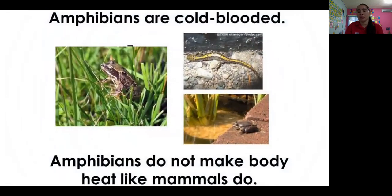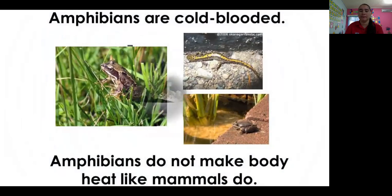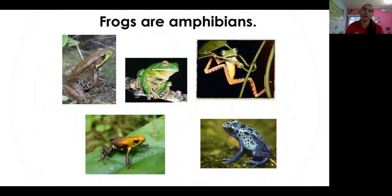The amphibians have cold blood. Their body does not make body heat. They don't come out in the sun to generate heat like the mammals or the reptiles do — their bodies are cold. Why are their bodies cold? Because they mostly live in the water.